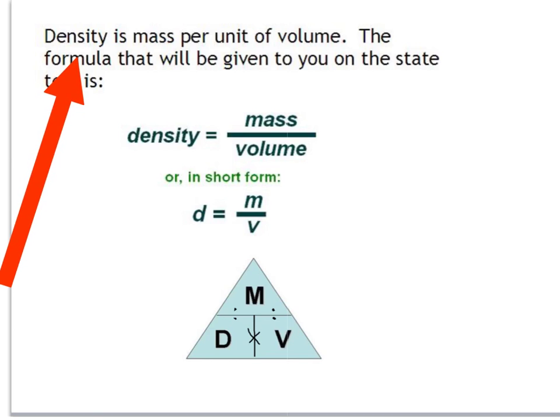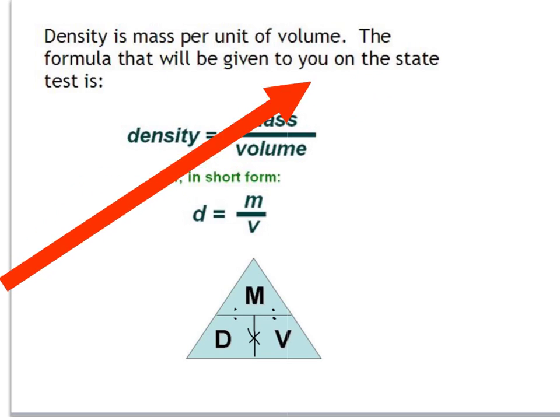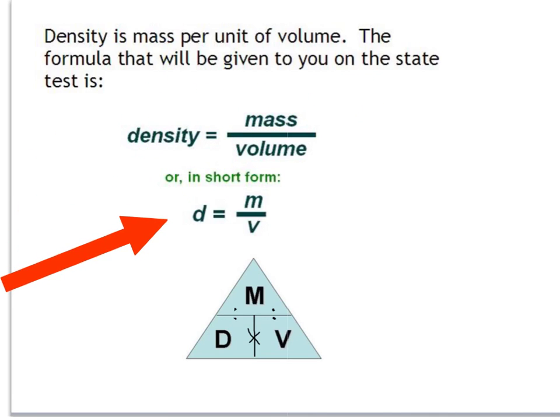The first thing you need to know is the definition of density, which is mass per unit of volume. The formula that will be given to you on the state test looks like this: density equals mass divided by volume, just like shown on the prior slide.